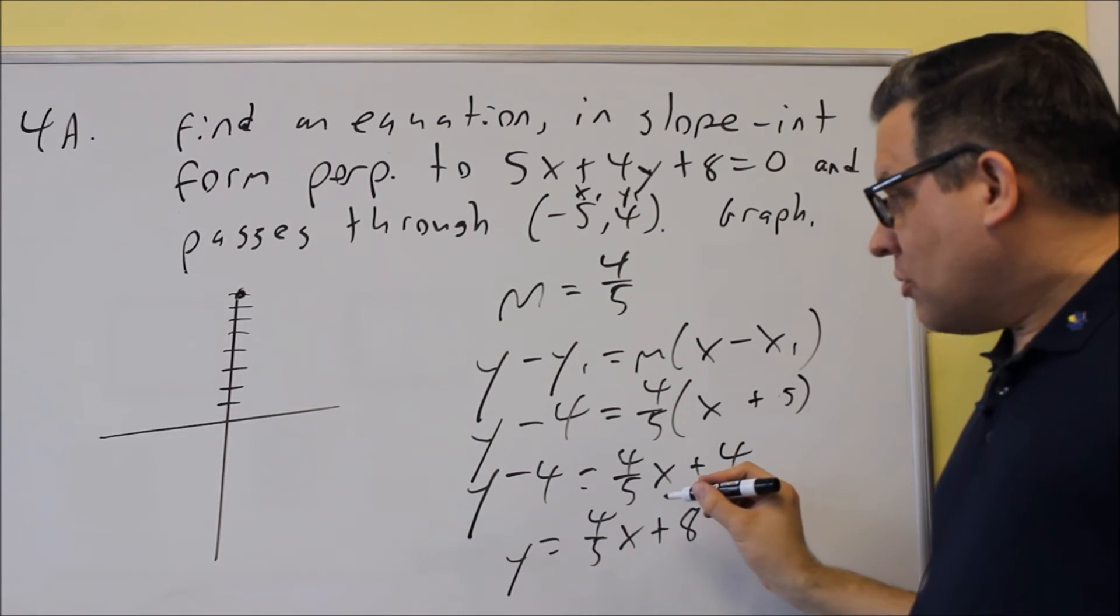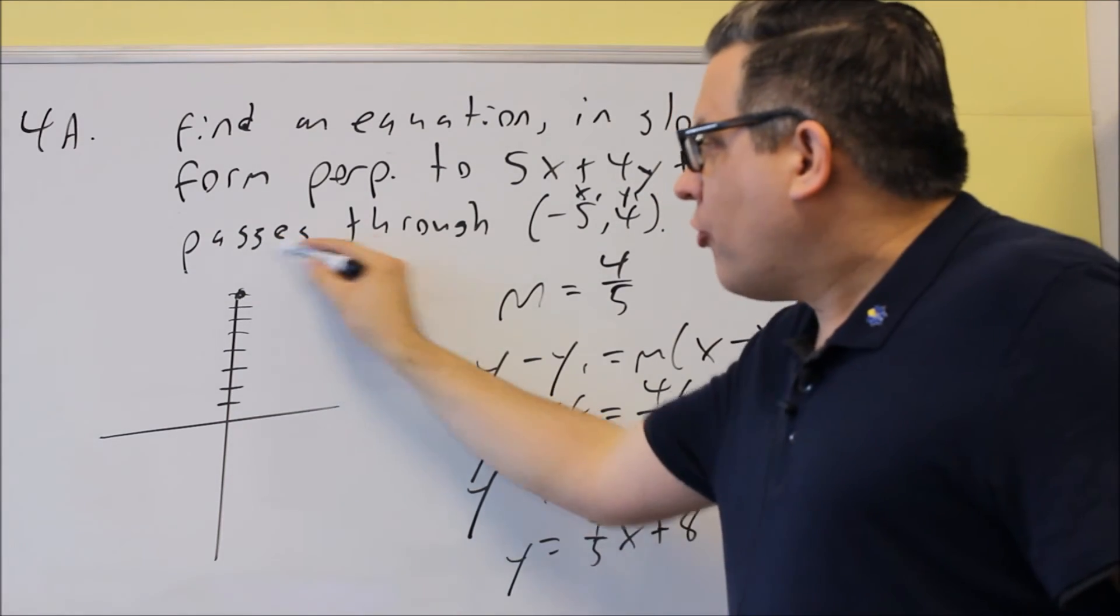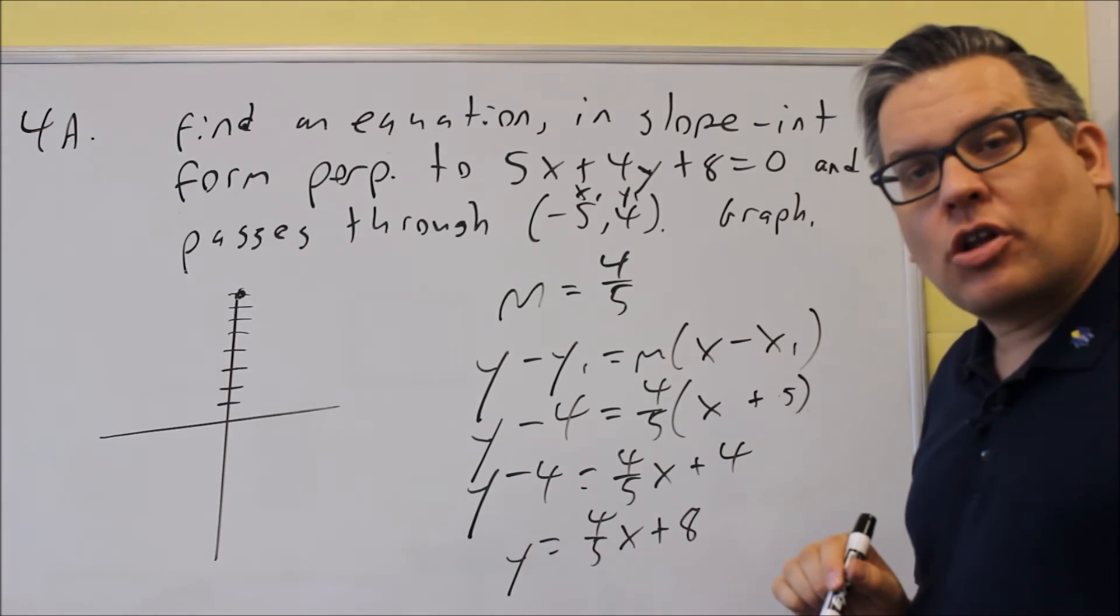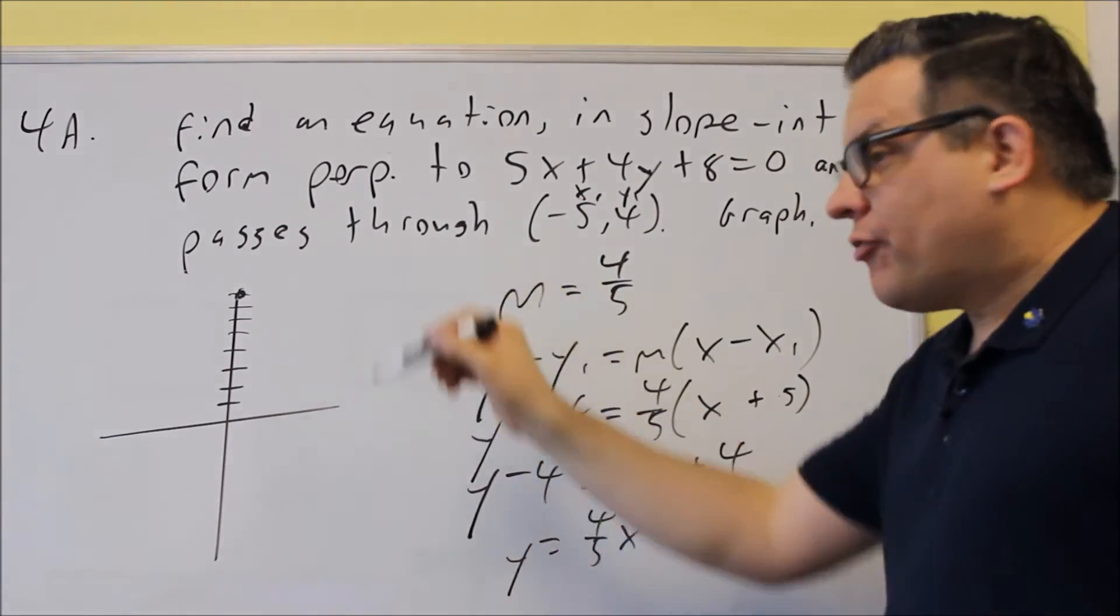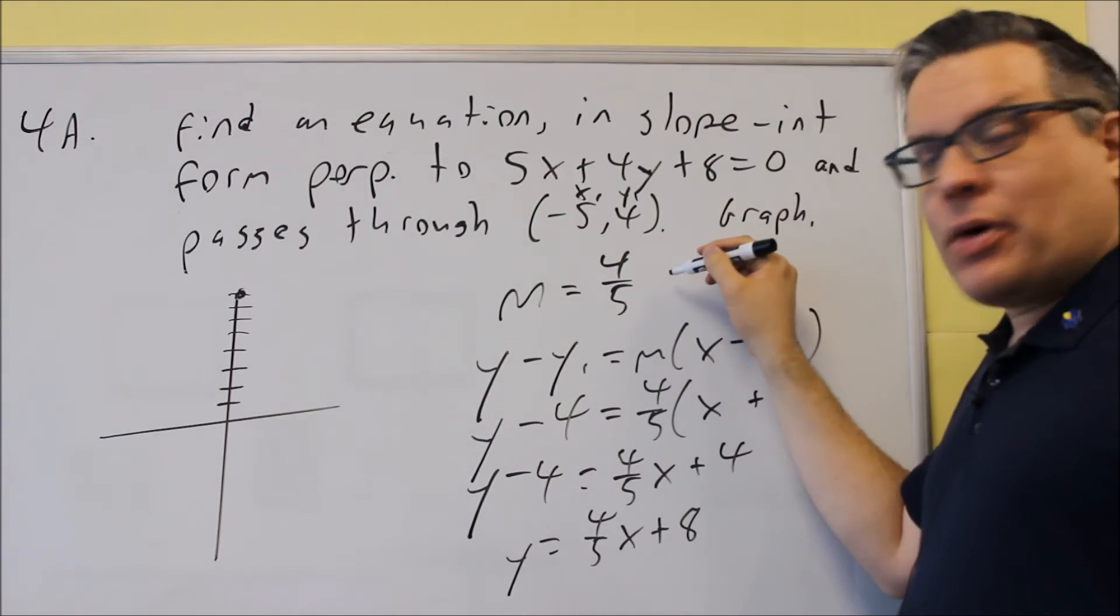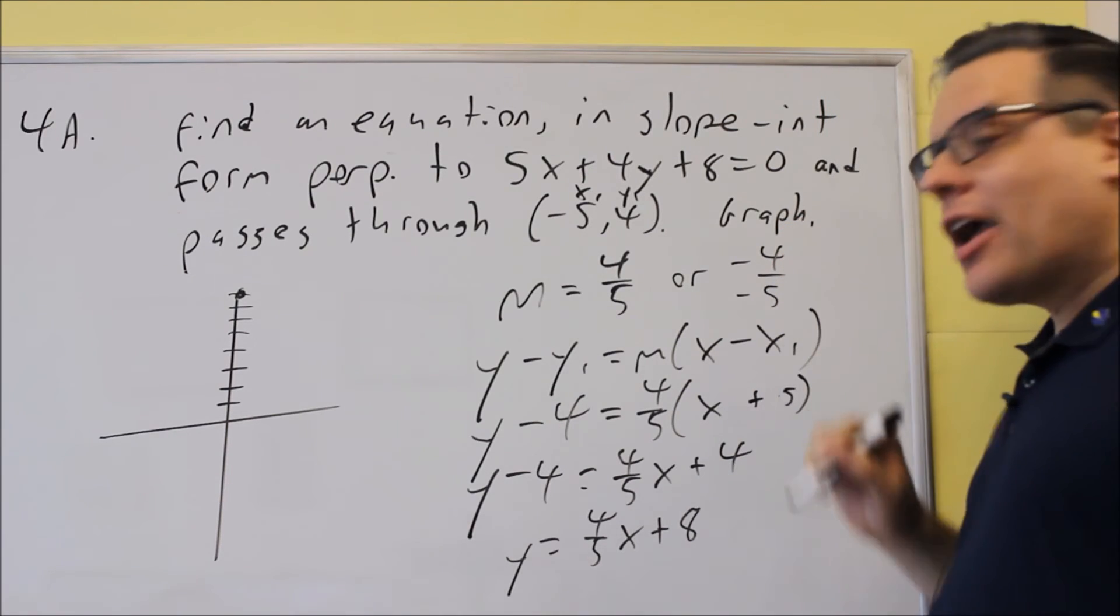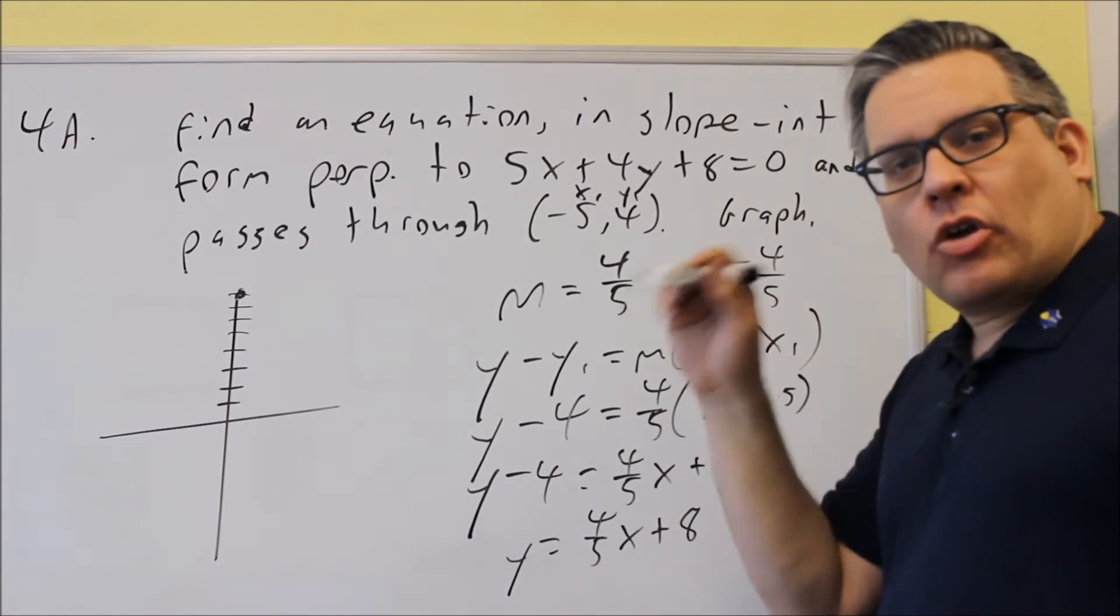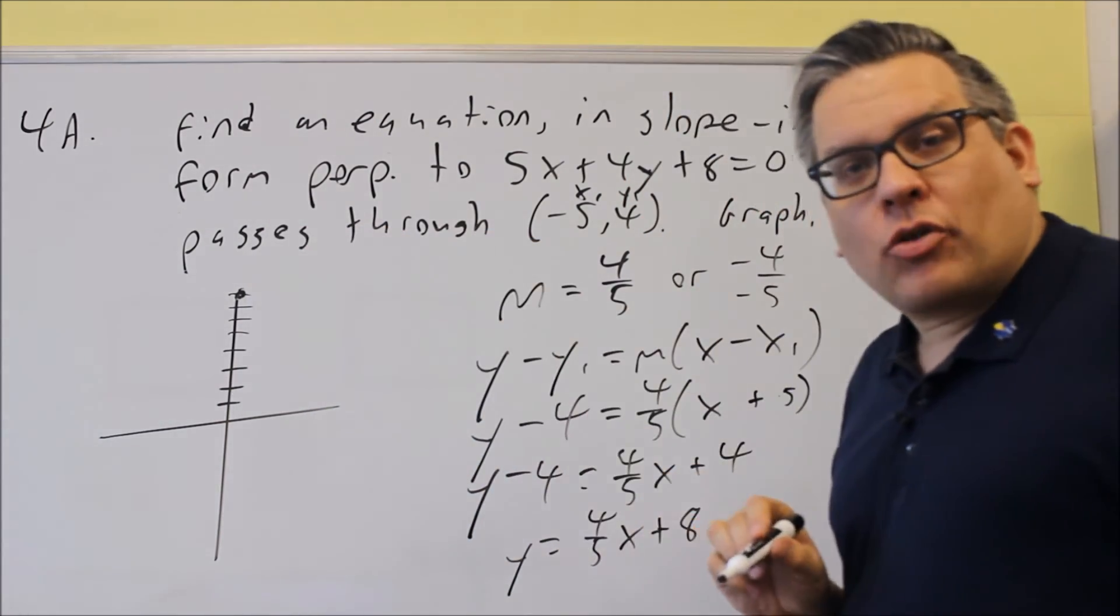So y equals 4 fifths x plus 8. So first what we do is we're going to go up 8. Now the slope is going to be 4 fifths. So you can either go up 4 over 5 or you can go down 4 back 5. It doesn't matter which direction that you want to go. So what I'm going to do is I'm going to go down 4 and back 5. Now remember, 4 fifths, you can write it as a positive number, or you can also consider it as negative 4 over negative 5.